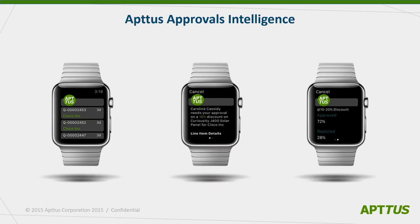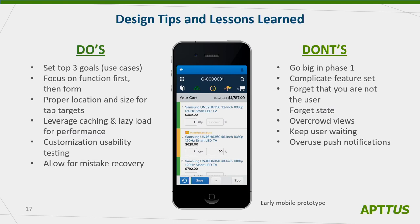Now let's talk about some do's and don'ts. Set your top three goals — meaning use cases. Focus on what are the most common things you want your users to do. Focus on function first, prototype and build those things, then worry about how it looks. Make sure you have the right size and location for tap targets. Leverage caching and lazy loading like we did with Wave so they don't have to wait. Allow for mistake recovery — in wearables especially, navigation is tricky and you always want to give users a way to get back out of what they were doing.